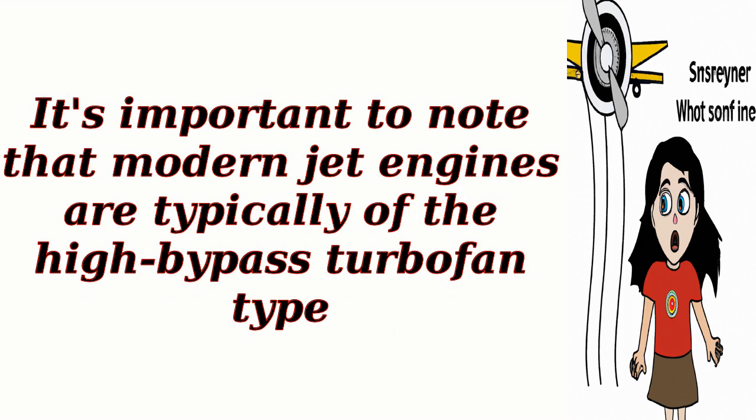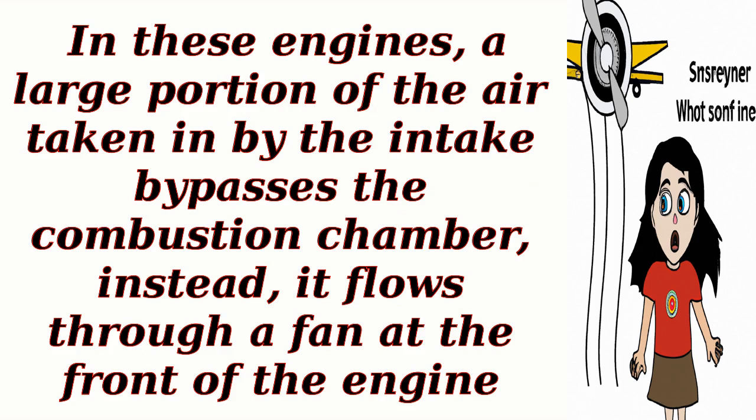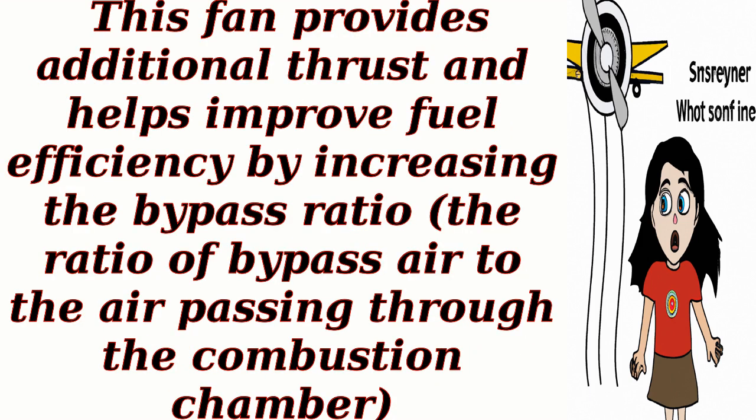It's important to note that modern jet engines are typically of the high-bypass turbofan type. In these engines, a large portion of the air taken in by the intake bypasses the combustion chamber. Instead, it flows through a fan at the front of the engine. This fan provides additional thrust and helps improve fuel efficiency by increasing the bypass ratio — the ratio of bypass air to the air passing through the combustion chamber.